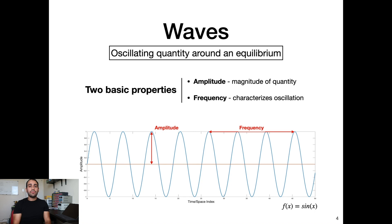Okay, so another very common thing and is very fundamental to understanding the Fourier transform is waves. So a wave is simply any oscillating quantity around an equilibrium. So there are two basic properties of waves: Amplitude, which is the magnitude of the quantity, and frequency, which characterizes the oscillation. So here we have a sine wave. So the amplitude is characterized by the y-axis, and the frequency is characterized by the number of peaks in a given time interval.